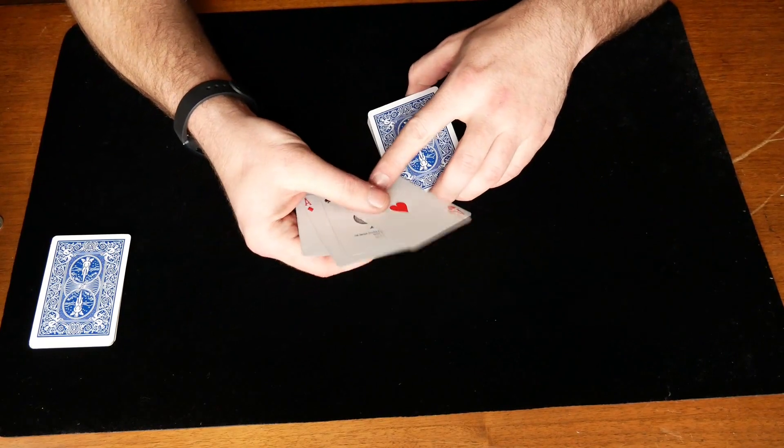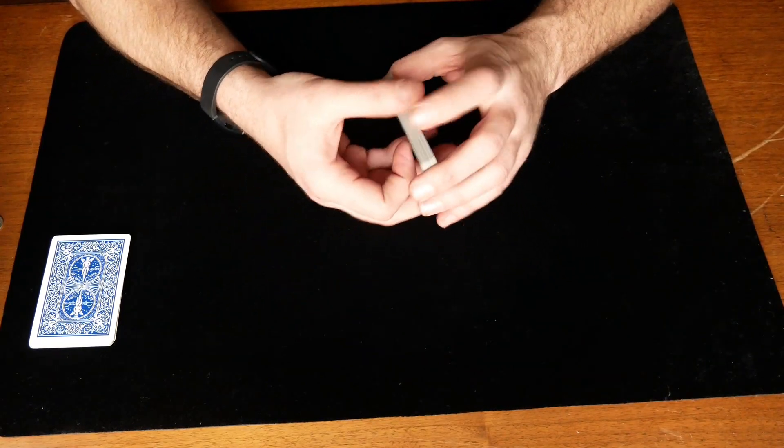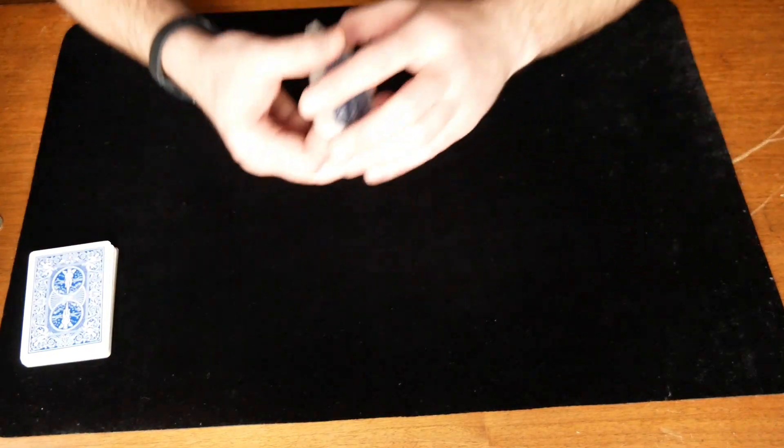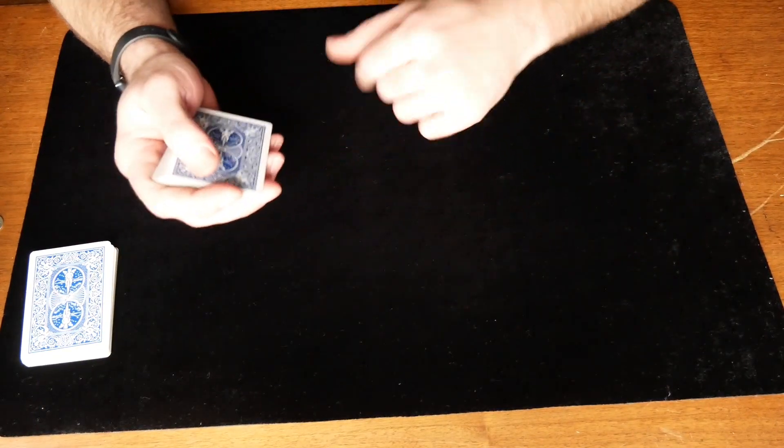So check this out. We're going to take the aces and put them on the bottom of the deck face up, just like this, and I'm going to deal four hands of cards.